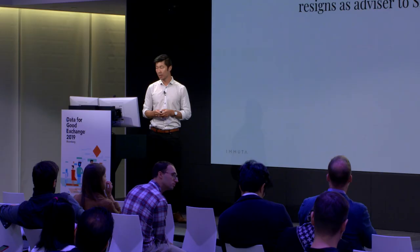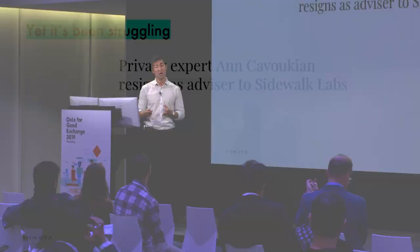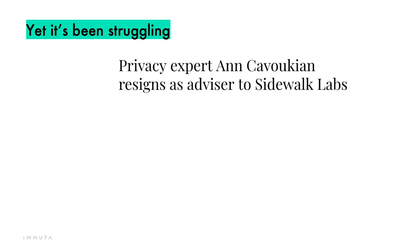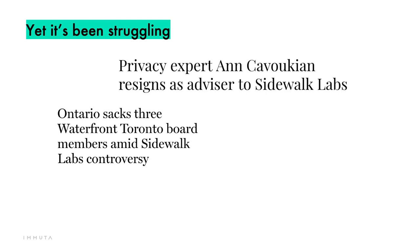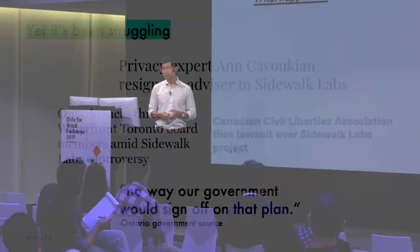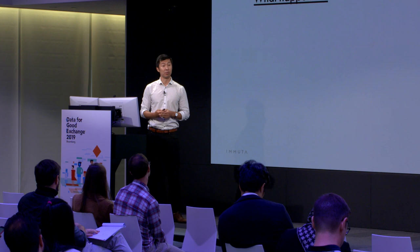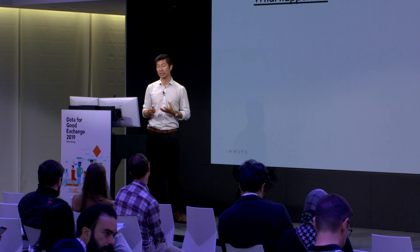Yet, surprisingly, it's been struggling. One of Toronto's and Ontario's former privacy commissioners resigned. Ontario sacked three members of the board, and Canada's version of the ACLU filed a national lawsuit against the project. High-level officials said they would not sign on to the plan. They had all the cards — fancy effective technologies, high-level government relationships — yet they were struggling. What this shows is that there was insufficient work done to think about trust with the local community.